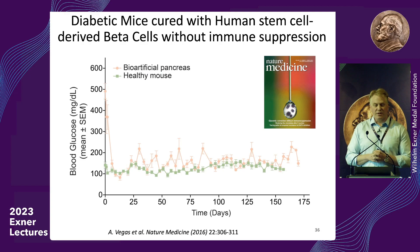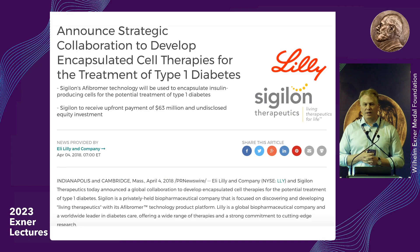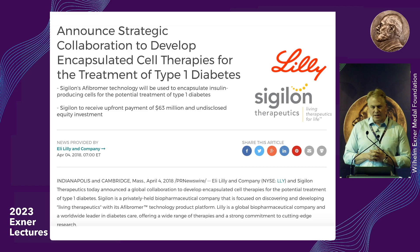We showed back in 2016, in collaboration with him, that we can take these new polymers and human cells and cure the diabetes of a mouse with a strong immune system — published in Nature Medicine. We went on to form a company called Sigilon that is working with Eli Lilly to advance these to the clinic, and I expect this will happen soon.